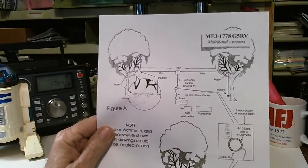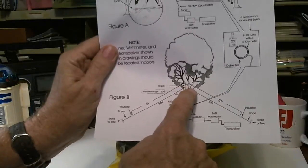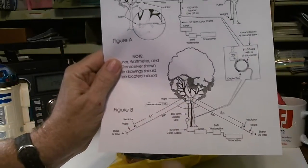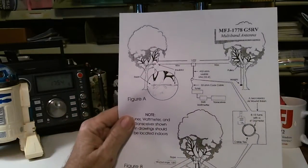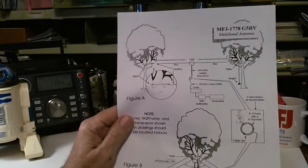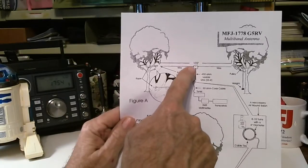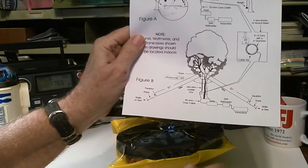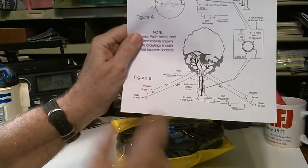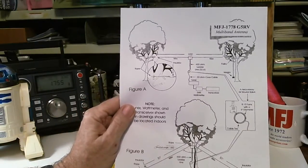You have to have room to stretch out that 102 feet. Now you can do some things, like down here they show using one tree and sloping it down. The two sides are 51 feet. The one that I have up now that's been up there for 35 years, maybe 45 years, is at the peak of my second story and then slopes down to two trees, one in my front yard and one in my back yard, diagonally across my yard. That's how I get all 102 feet stretched out.